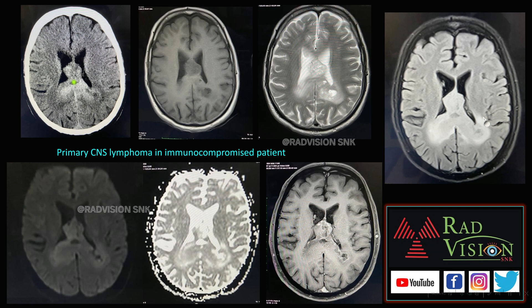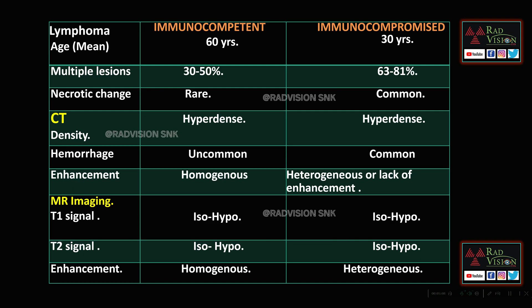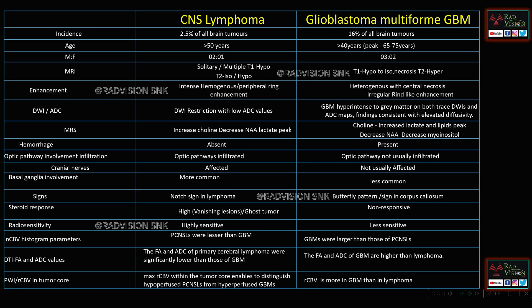In immunocompromised patients, primary CNS lymphoma also appears hyperdense on CT in the periventricular location with subependymal spread, heterogeneously hyperintense on T2, with perilesional edema, intense heterogeneous enhancement, and necrosis. Key differentiations: multiple lesions and necrotic changes are common in immunocompromised; lymphoma is hyperdense on CT in both groups; hemorrhage is uncommon in immunocompetent but common in immunocompromised; enhancement is homogeneous in immunocompetent but heterogeneous in immunocompromised patients.